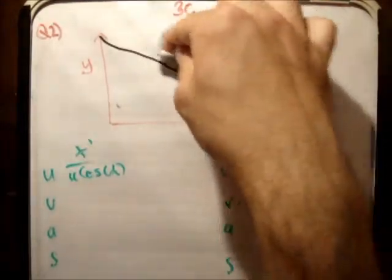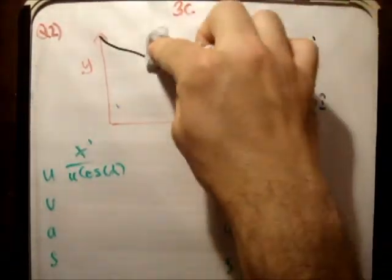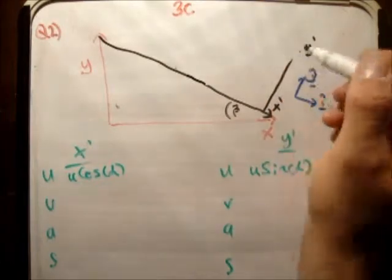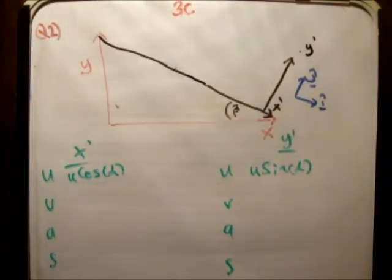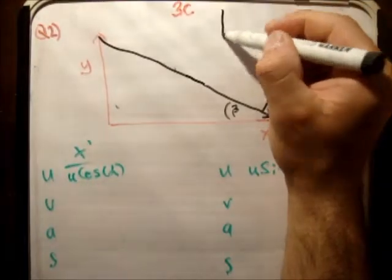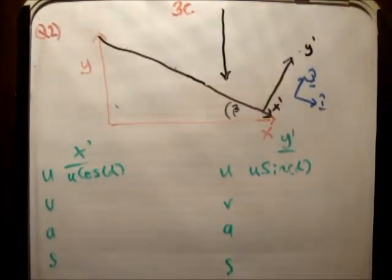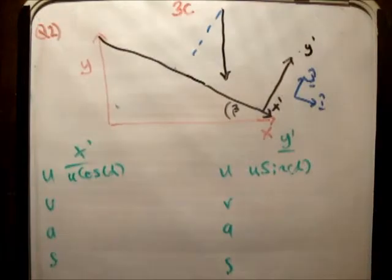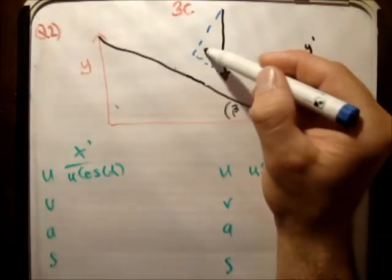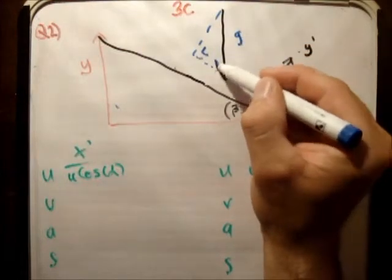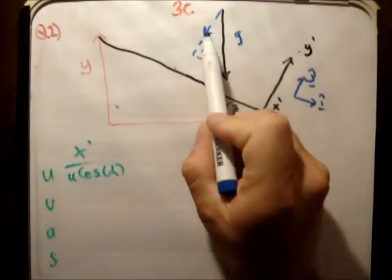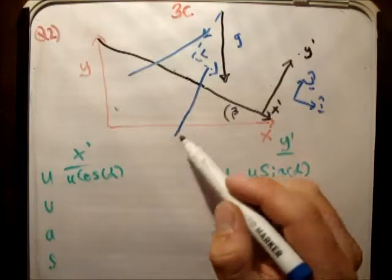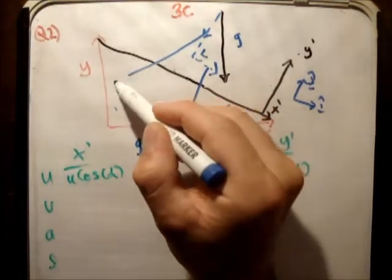Now I want to resolve gravity, which is the trickier of the two. Gravity acts in the negative y dimension, so it acts in this direction here. We resolve this by drawing a line parallel with the y prime, and then a line parallel with the x prime — that's a 90-degree angle. This is g, giving us g sub y and g sub x. This angle here is beta, and because of the geometry, that beta appears up here too.